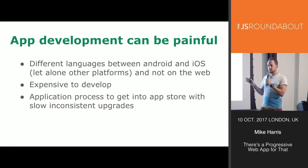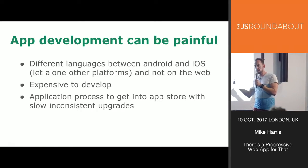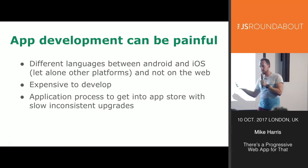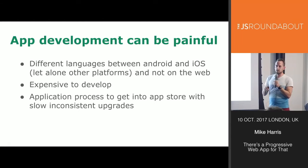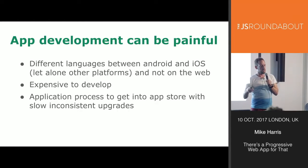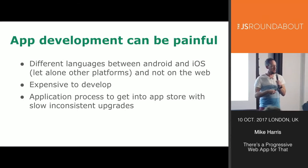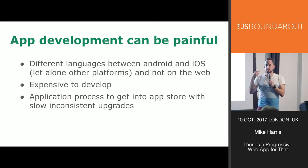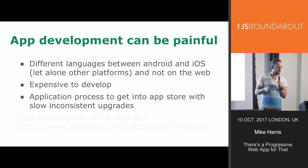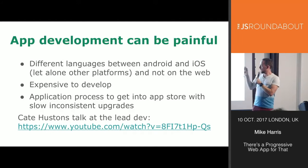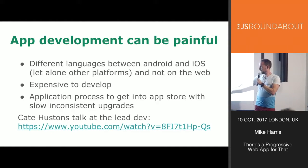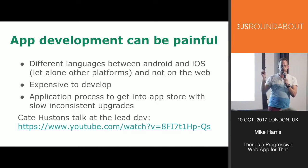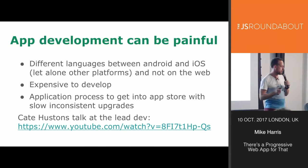And then there's the application process. It's got a lot better, but there's still a process to get into the App Store and a different one for Android. And even the release process — if you want to release on the web it goes to your customer straight away, but with a native app you have to rely on your customers constantly updating their phones. There's a really good video from Kate Huston at the Lead Dev if you're interested — these slides will go around and you can look at that.